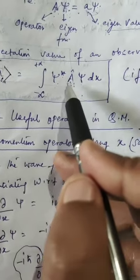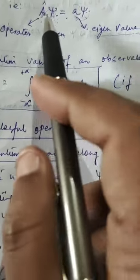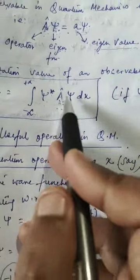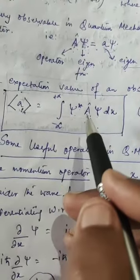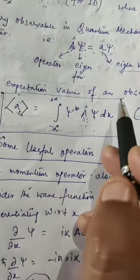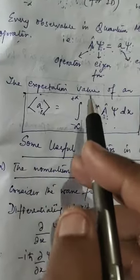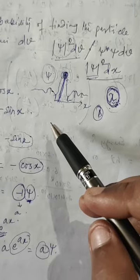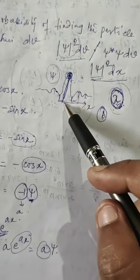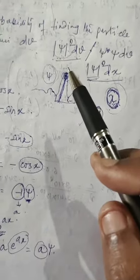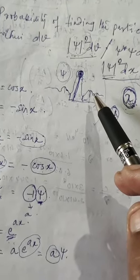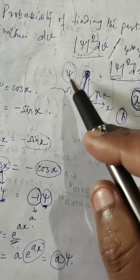So first operate A-hat on psi — you get a value a and psi back — then multiply by psi-star and integrate. This is very important for problem solving. Now why physically is this the expectation value? Consider this wave function of an electron — I give N copies of this electron to N students. Every student measures the position of the electron differently, and nobody is making a mistake, because the electron is at different places simultaneously — it behaves as a wave until measured.